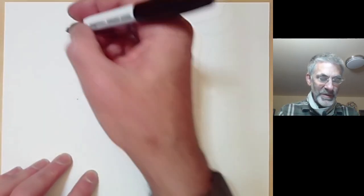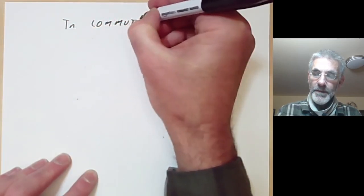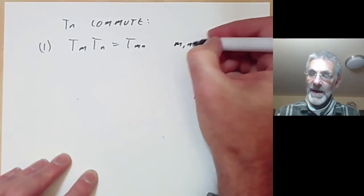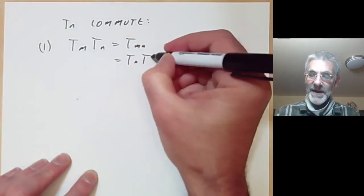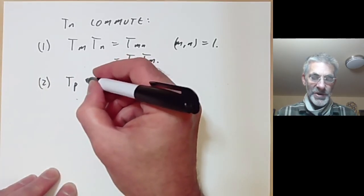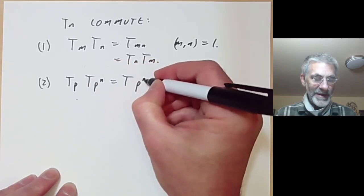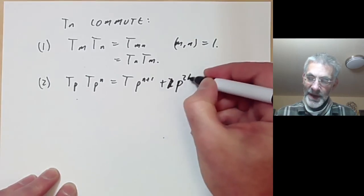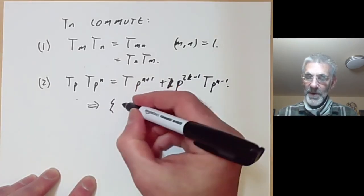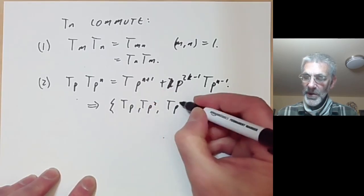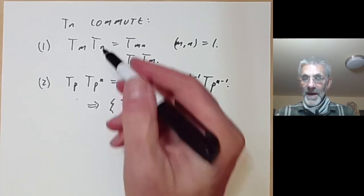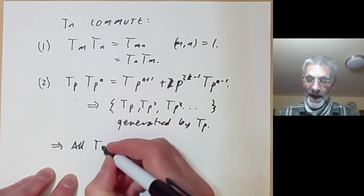We have pretty much shown that the T_n all commute. To show this, we first observe that T_m times T_n equals T_{mn} whenever m and n are coprime, and this equals T_n T_m, so they commute when m and n are coprime. For the non-coprime case, we showed that T_p times T_{p^n} equals T_{p^{n+1}} plus p^{2k-1} T_{p^{n-1}}. This implies that the algebra of operators spanned by T_p, T_{p^2}, T_{p^3}, and so on is just generated by the single operator T_p. These two facts together imply that all the T_n commute with each other.